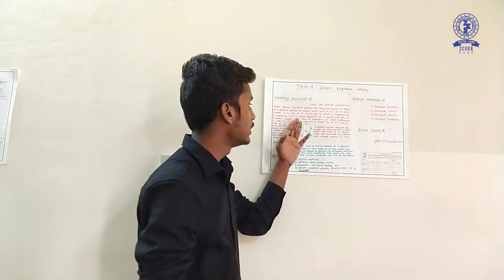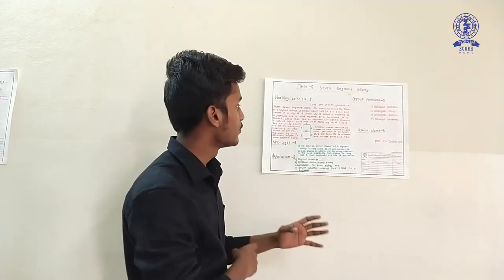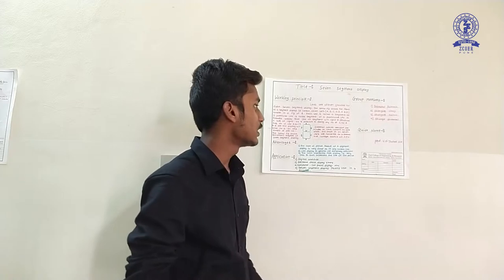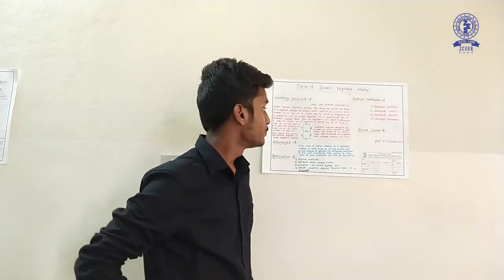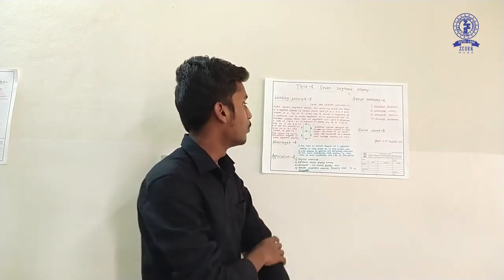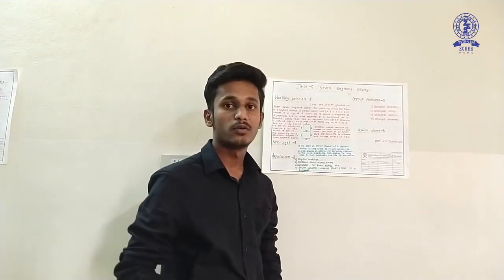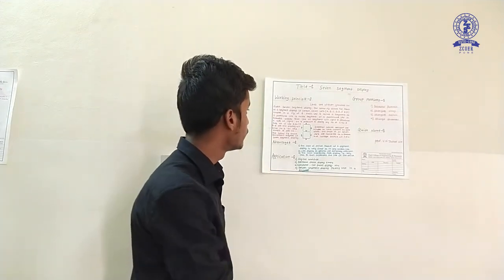Each particular LED is called a segment. If a particular LED is in forward bias condition, it displays. This display can show any number from 0 to 9. This is the working principle.